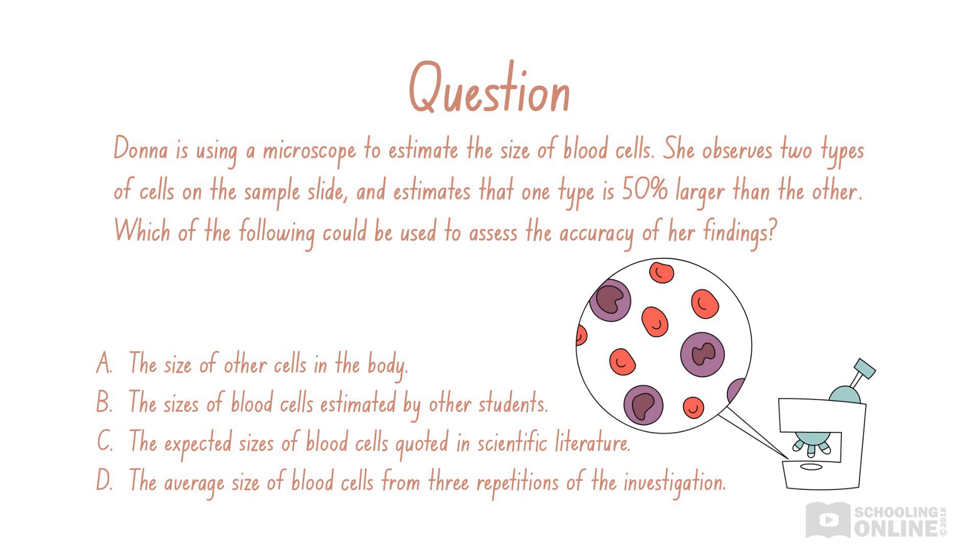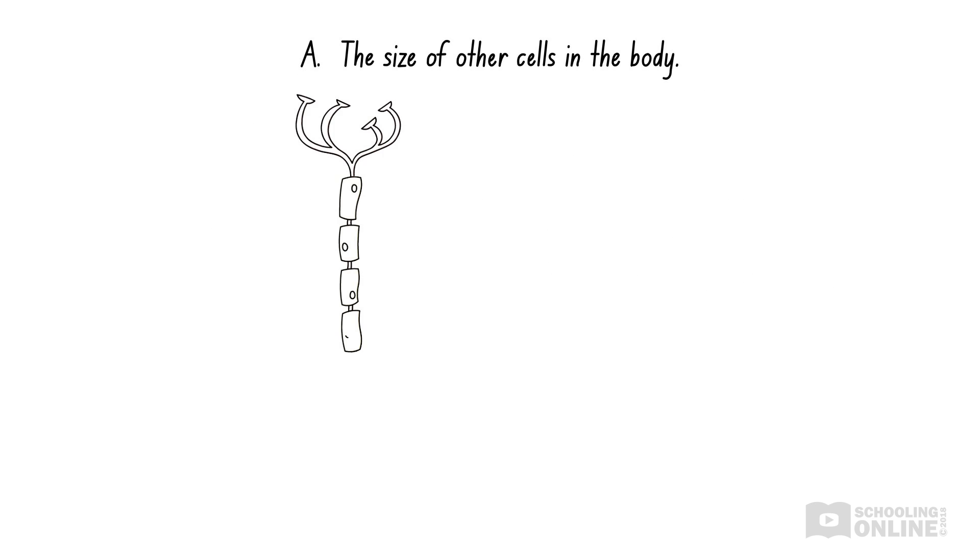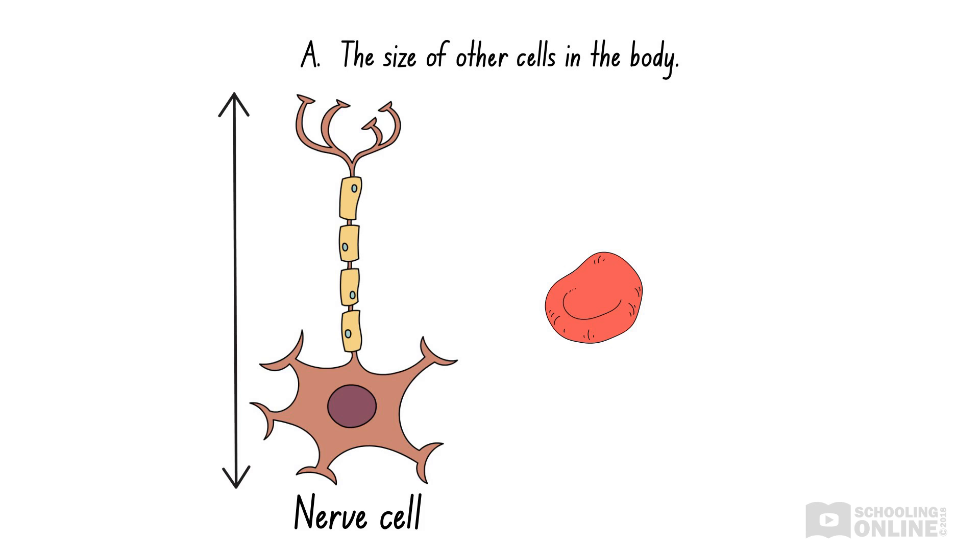In general, a good approach to multiple choice questions is to check each of the available options and pick the best answer using the process of elimination. Starting with option A, the size of other cells in the body will not help us to determine the size of the blood cells that we're observing. This is because cells in our body differ in their size and shape depending on their role and where they are found. For example, nerve cells are long, skinny and can grow to over one meter, while red blood cells are tiny discs that are thinner in the center and have a diameter of approximately eight micrometers. That's the same as eight millionths of a meter, which is really small. Therefore, option A is incorrect.